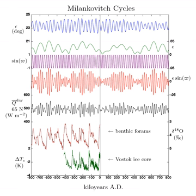Increased tilt increases the total annual solar radiation at higher latitudes, and decreases the total closer to the equator. The current trend of decreasing tilt, by itself, will promote milder seasons, as well as an overall cooling trend.